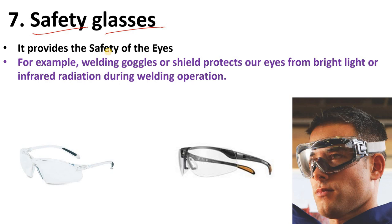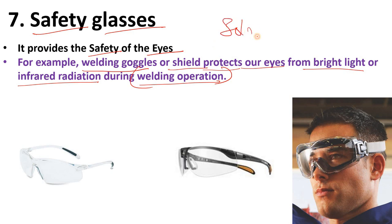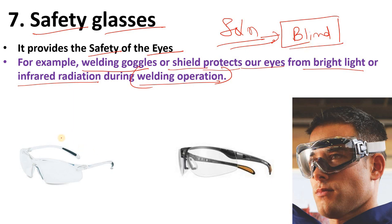Safety glasses will protect our eyes from any incident — they provide safety for our eyes. For example, welding goggles or a shield protects our eyes from bright light or infrared radiation during welding operations. If any solution comes in contact with your eyes, it may create serious injury or may even lead to blindness — that can also happen many times. That's why while working in an industry or dealing with any job, you must wear safety glasses.